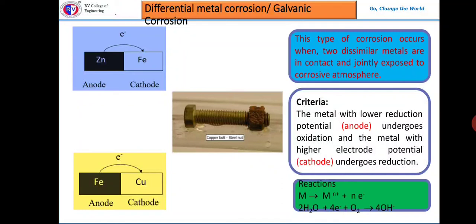To prevent galvanic corrosion, we can place a thin layer of insulator between the two metals, or select a suitable material with very less potential difference. The rate of galvanic corrosion mainly depends upon factors such as the potential difference between anodic and cathodic areas, the ratio of anodic area to cathodic area, environmental factors, and the tendency of the metal to exhibit passivity. These factors will be discussed in the next class.